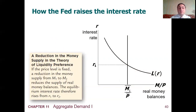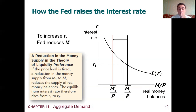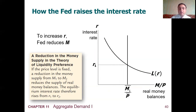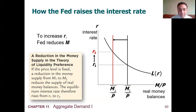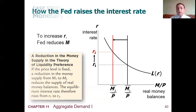How does the central bank raise the interest rate? To increase interest rates, the central bank reduces the money supply. According to the supply and demand framework, when money supply increases, the interest rate decreases. A reduction in money supply from M1 to M2, with a fixed price level, reduces the supply of real money balances, and the equilibrium interest rate rises from R1 to R2.